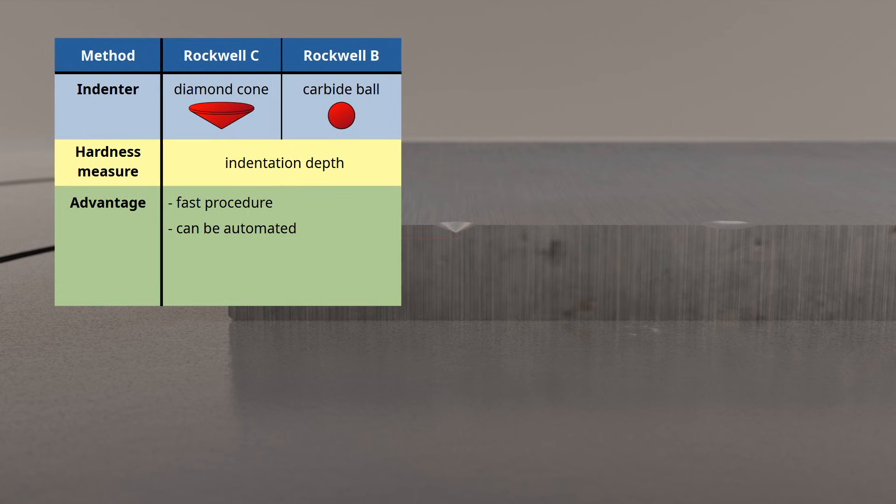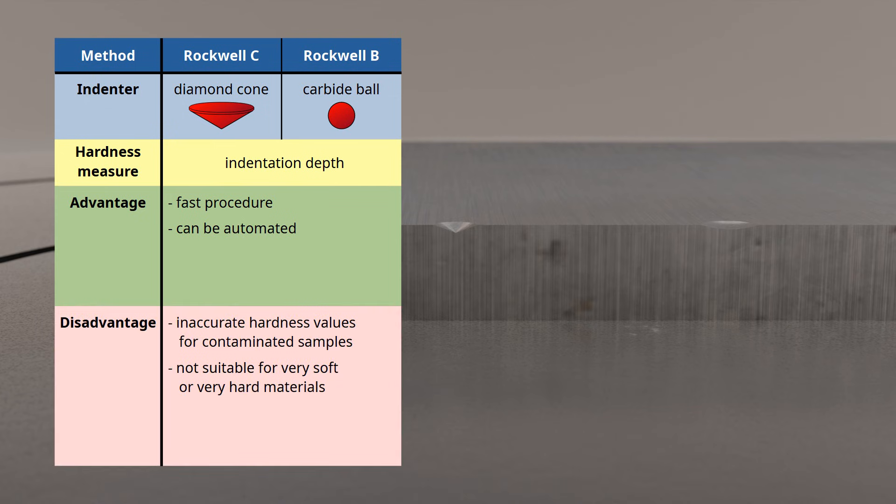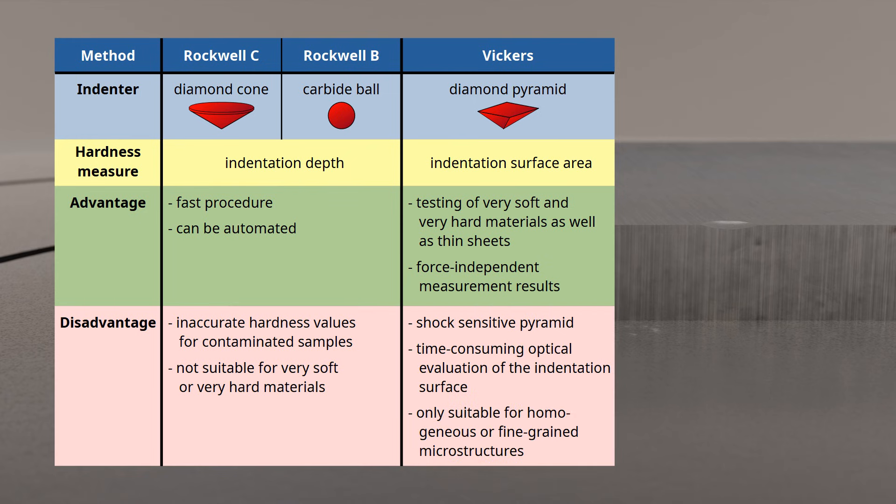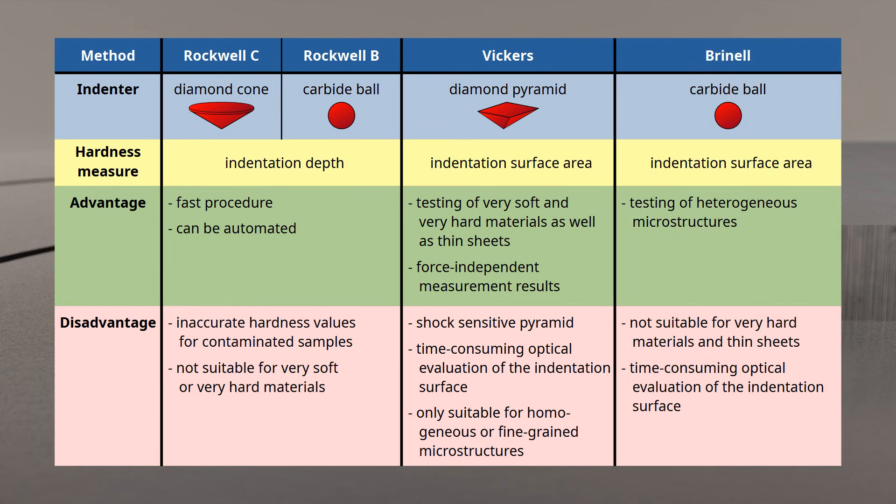The advantage of Rockwell hardness testing lies in its relatively short testing time and excellent automation capability, as the measured values are directly derived from the indentation depth without the need for optical measurement under a microscope. This makes the method particularly suitable for automated production. However, a disadvantage of the Rockwell method is its relatively small depth range. Even small impurities in the material can cause significant deviations in the indentation depth, and thus in the hardness value. This issue is especially pronounced when testing very hard materials, where the measuring accuracy is compromised due to the minimal differences in indentation depths. In such cases, the Vickers test method is much more suitable for hard materials. However, it has disadvantages when testing heterogeneous materials such as cast iron. In this case, the Brunel hardness method should be used. The table summarizes the advantages and disadvantages of the different testing methods.